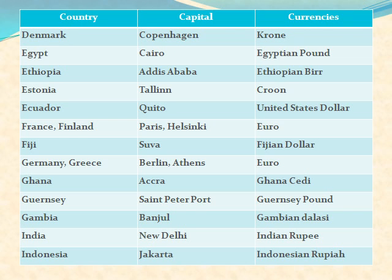Estonia: capital is Tallinn and currency is Krone. Ecuador: capital is Quito and currency is United States dollar. France: its capital is Paris and currency is Euro. Finland: its capital is Helsinki and currency is Euro. Fiji: its capital is Suva and currency is Fijian dollar.